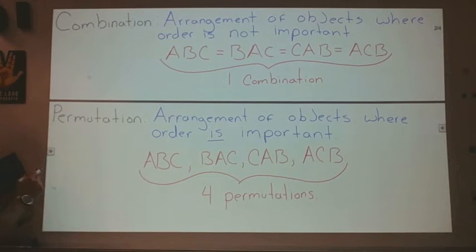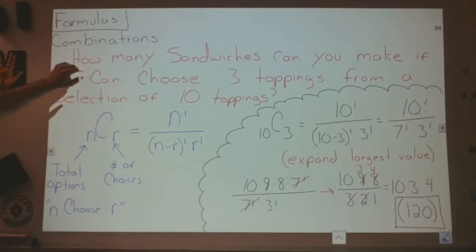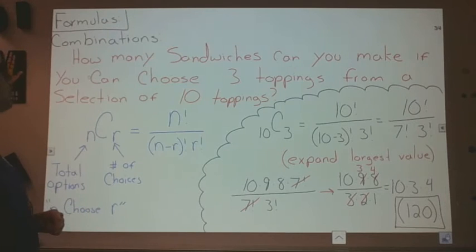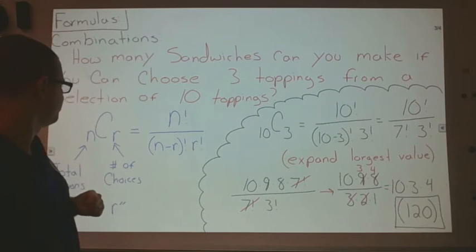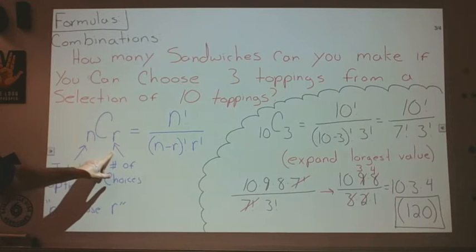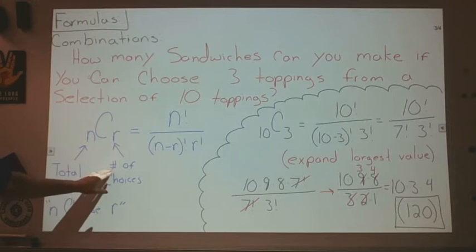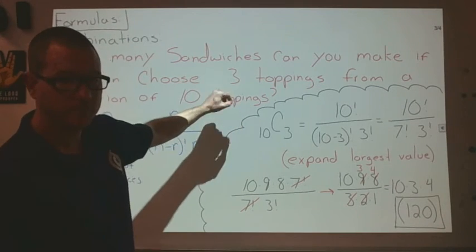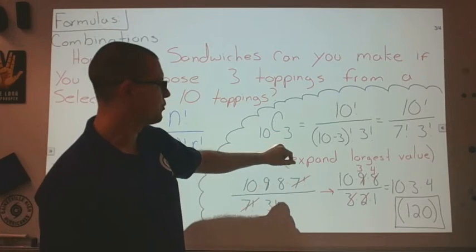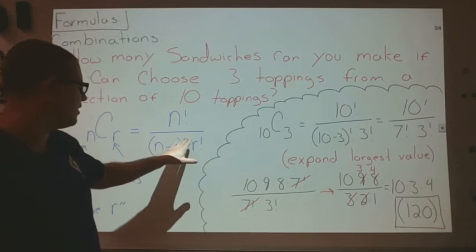We're going to do combinations first. How many sandwiches can you make if you can choose three toppings from a selection of ten toppings? You've got a buffet with ten toppings for your sandwich, and you can select three of them. Here's our formula: N choose R, where N is the total number of options — in this case we have ten total options — and R is the number of actual choices we can make. So even though we have ten toppings, we can only choose three of them, making it ten choose three. The formula is N factorial over N minus R factorial times R factorial.